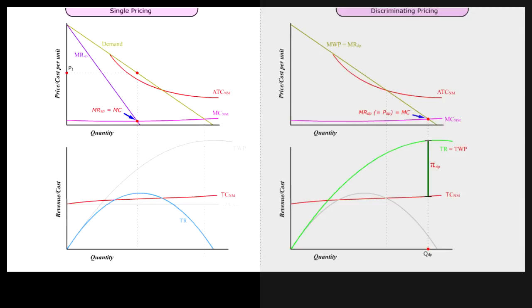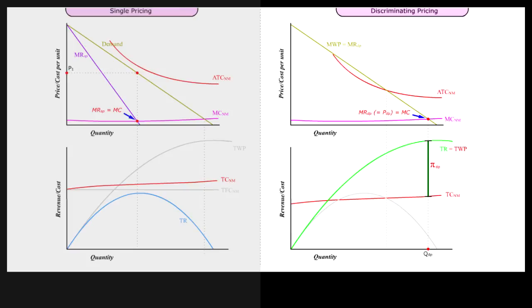Observation 7: Even if ATC is entirely above the demand curve, where not even a single pricing monopoly would want to produce, perfect price discrimination can still ensure profit for the natural monopoly without any government regulation.